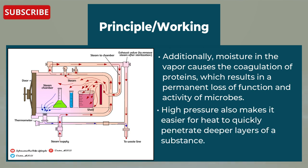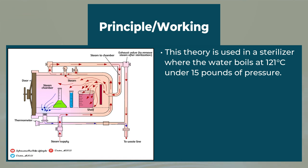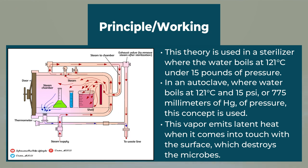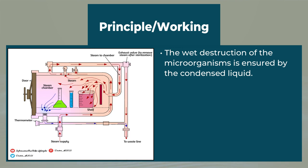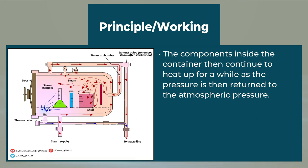High pressure also makes it easier for heat to quickly penetrate deeper layers of a substance. This principle is used in a sterilizer where the water boils at 121 degrees Celsius under 15 pounds of pressure, at 15 Pascals or 775 mmHg. This vapor emits latent heat when it comes into contact with the surface, destroying the microbes. The wet destruction of the microorganisms is ensured by the condensed liquid. The air inside the compartment is released through the vessels once sterilization is finished, and the components then continue to heat up as the pressure returns to atmospheric pressure.